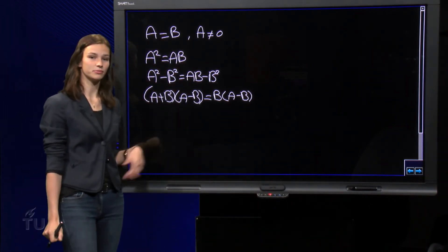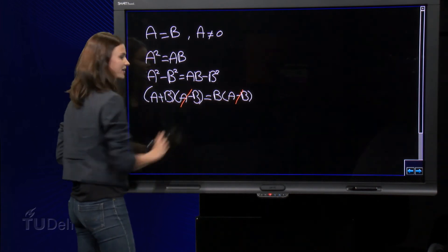As you can see, we have A minus B at both sides, so we get rid of that.